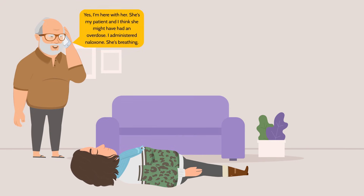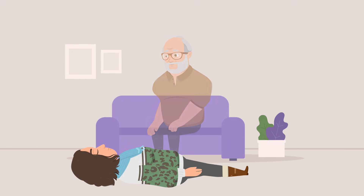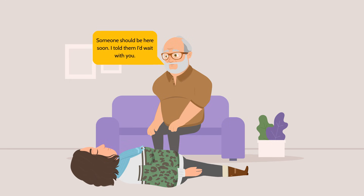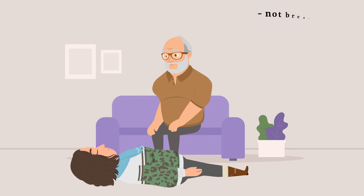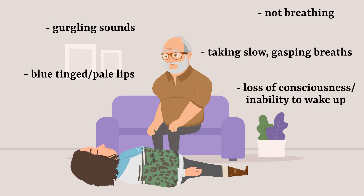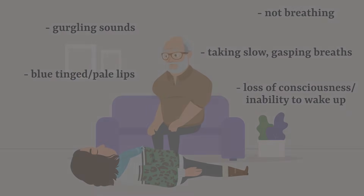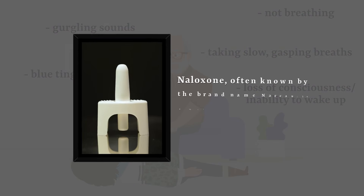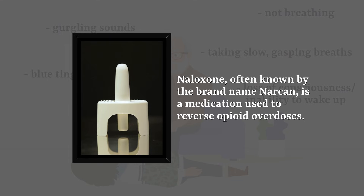Xylozine is often mixed with opioids, and the combined effects of xylozine and opioids can increase the risk of an opioid overdose. Signs of an opioid overdose with or without the presence of xylozine include not breathing, making gurgling sounds or taking slow gasping breaths, blue-tinged or pale lips, and loss of consciousness or inability to wake up. Xylozine does not respond to naloxone, but because we cannot know what mix of substances someone has taken, it is always important to use naloxone when responding to someone with any signs of overdose.